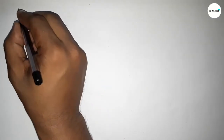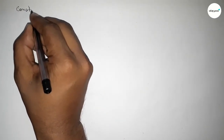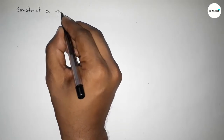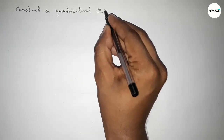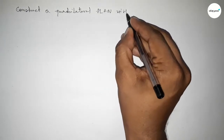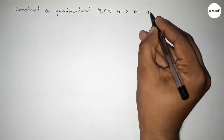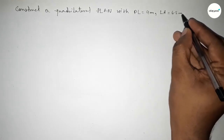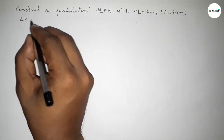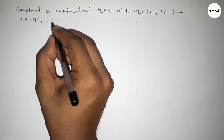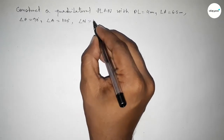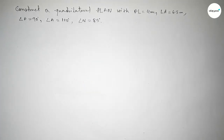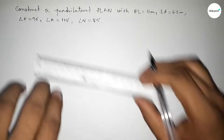Hi everyone, welcome to Essay Share Classes. Today in this video we have to construct a quadrilateral PLAN with given measurements: PL equal to 4 centimeters, LA equal to 6.5 centimeters, angle P equal to 90 degrees, angle A equal to 110 degrees, and angle N equal to 85 degrees. So let's start the video.